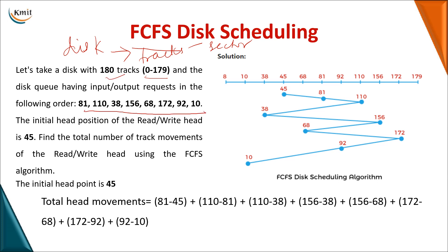These are the requests given for accessing the disk — track numbers 81, 110, and so on — and this is the order in which you need to access them. To read or write data, you require a read-write head, and the initial position of the read-write head is at track number 45.